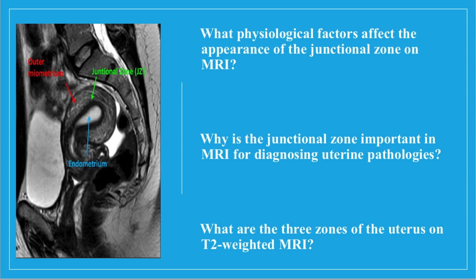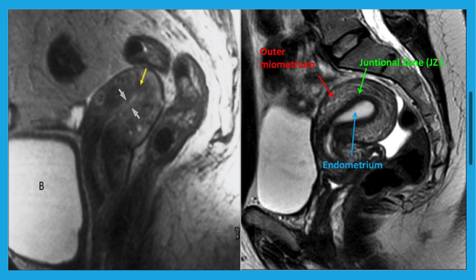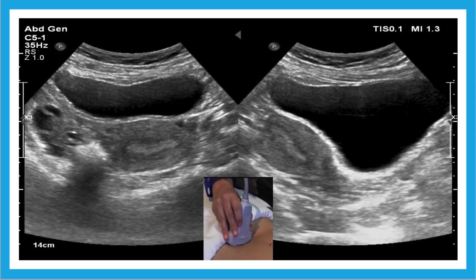In the first image we see a normal menopausal MRI of the uterus with a thinned-out endometrium and a barely visible junctional zone. On the other hand, we see a normal 30-year-old retroverted uterus with three clear zones: the myometrium, the endometrium, and the junctional zone in between. Ultrasound is the modality of choice for most gynecological conditions.